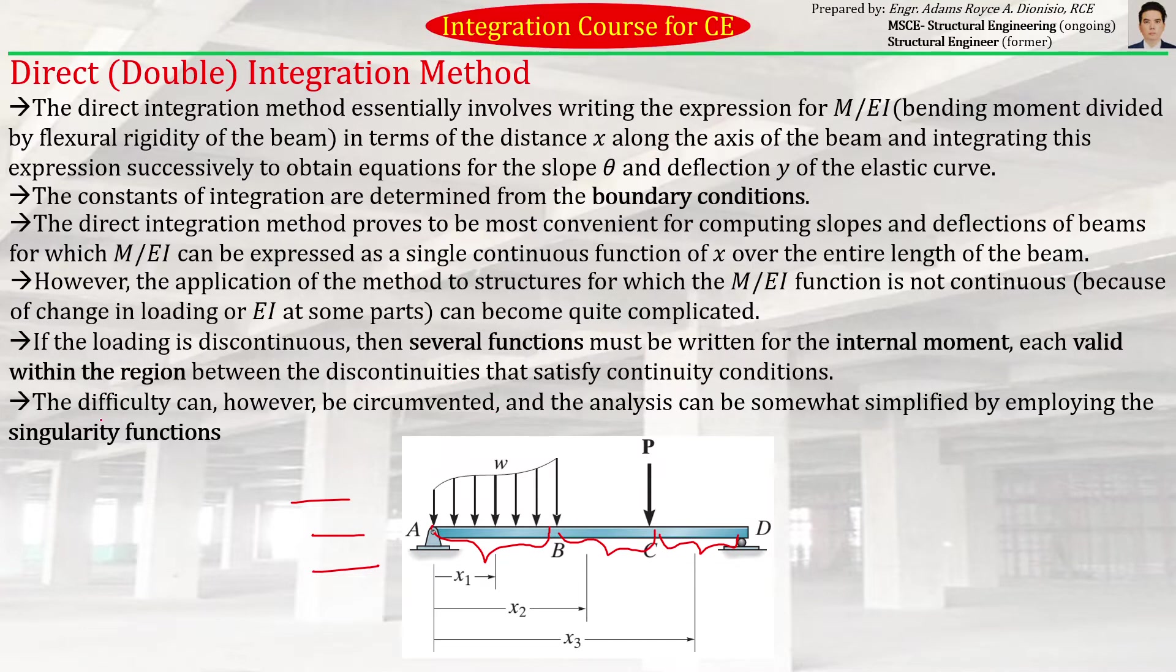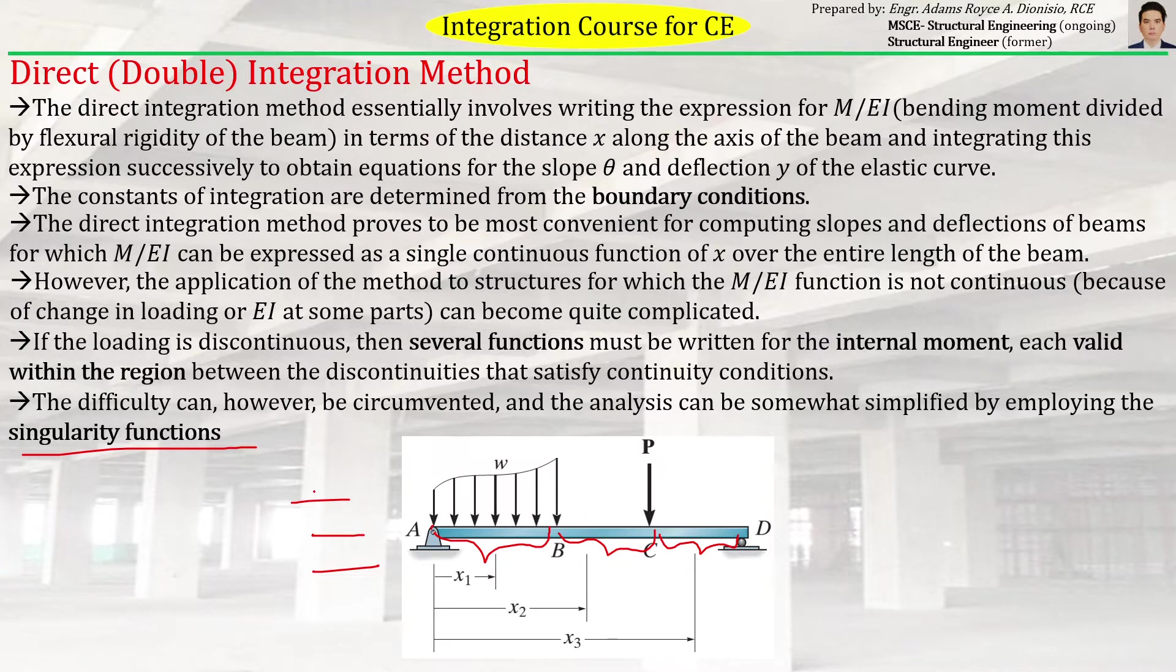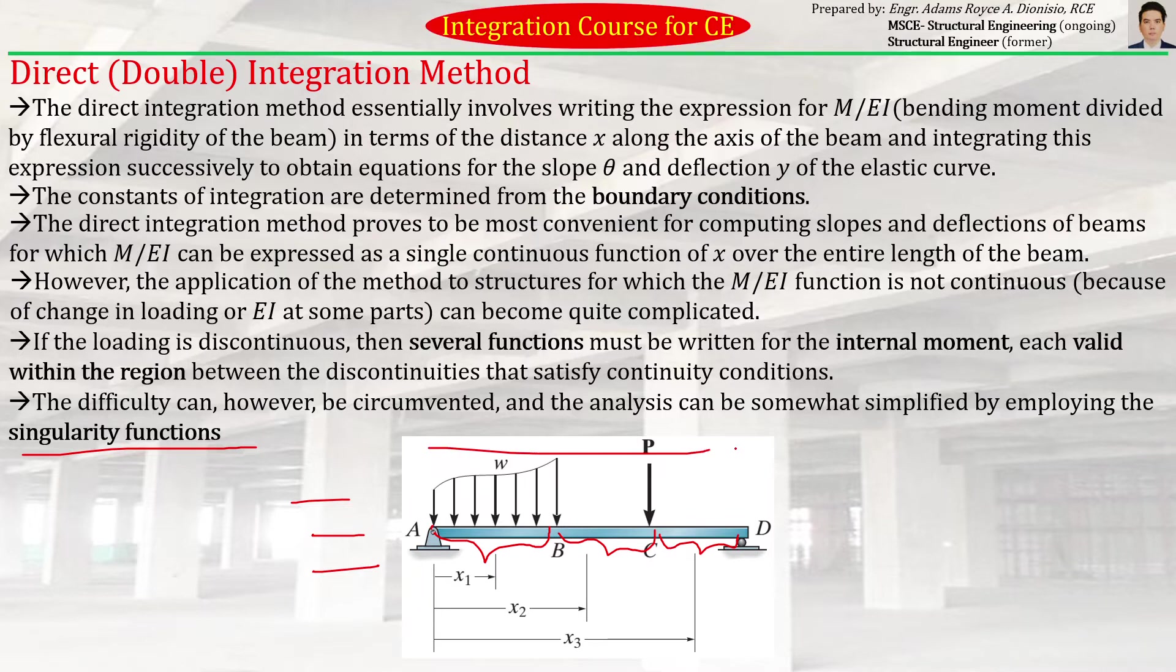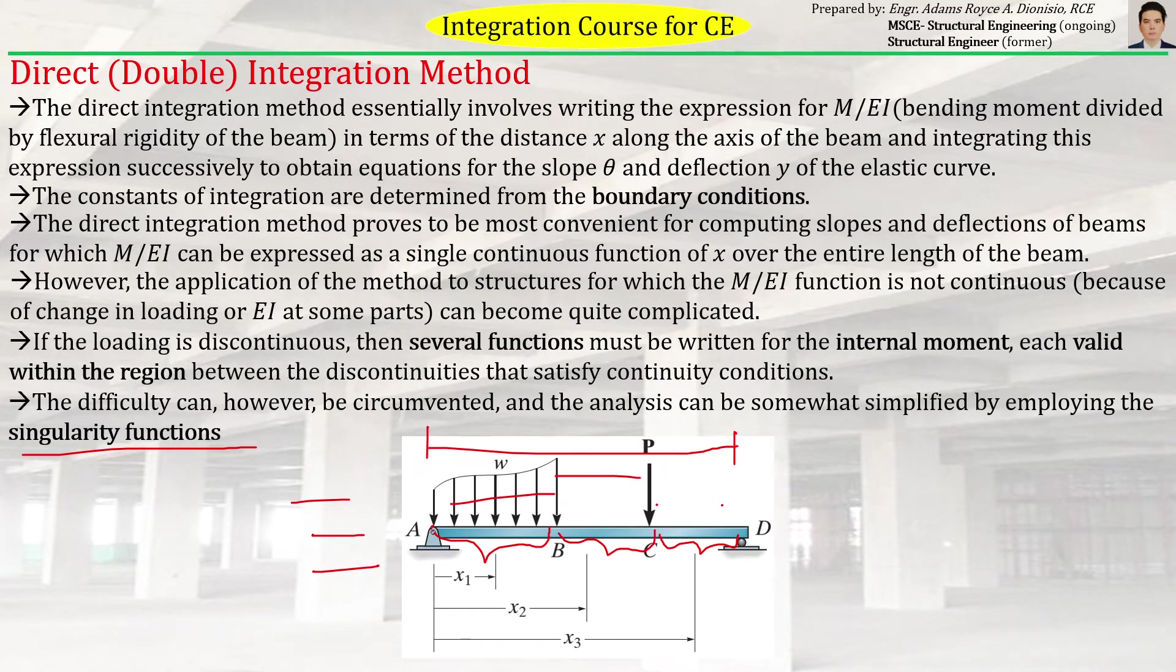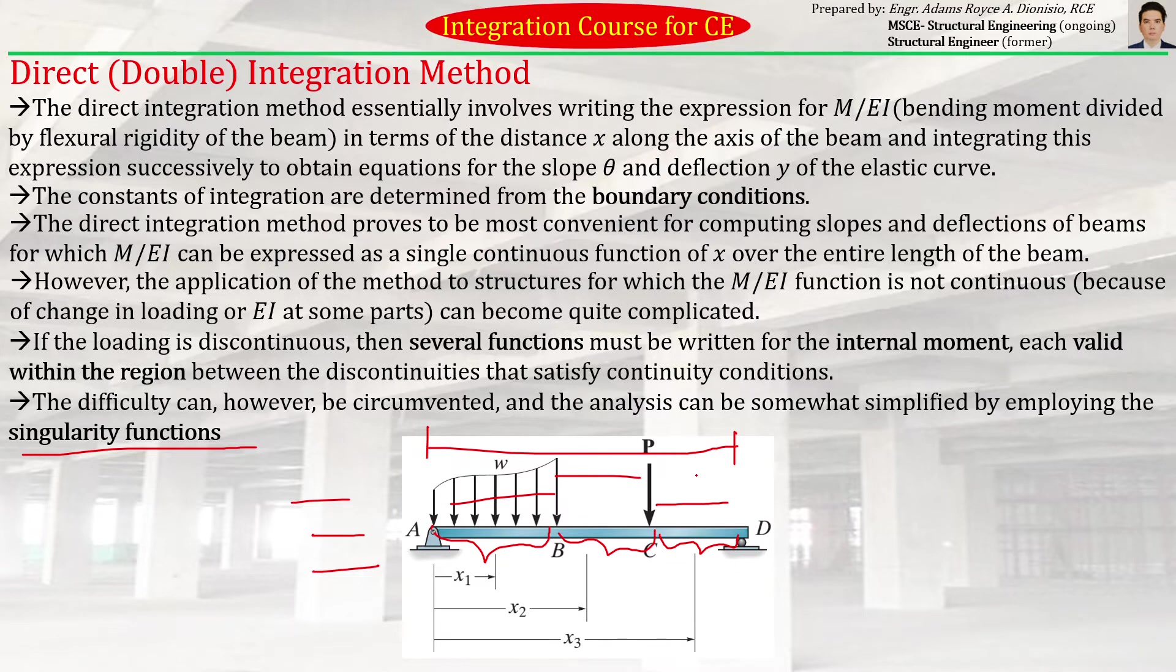That's possible. It will just have ranges from point A to B, from B to C. Or we can use the singularity functions, wherein we try to provide a single equation that is valid for the whole span, not per span. That's what we call the singularity functions.